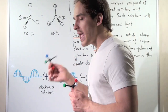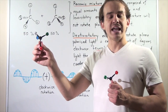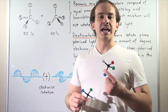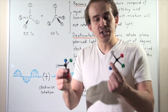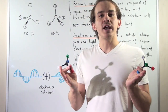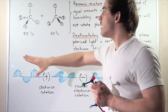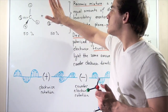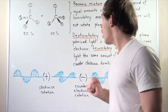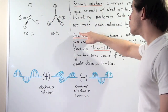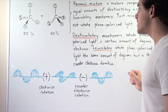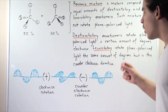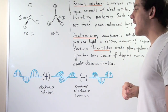In container A, I have one type of enantiomer. In container B, I have a second type of enantiomer. And in container C, I create a racemic mixture of 50% of one enantiomer and 50% of the second enantiomer. Recall that dextrorotatory is also represented by a positive sign, and levorotatory is also represented by a negative sign.